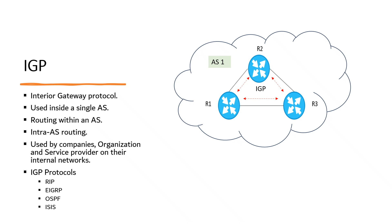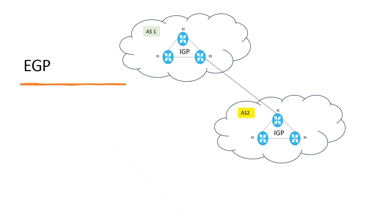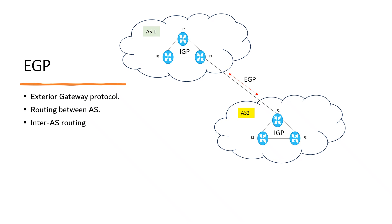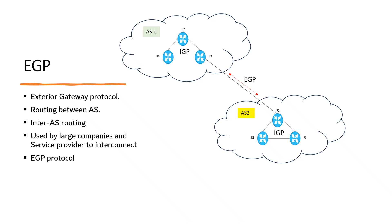In our CCNA curriculum, we only cover OSPF, which we will discuss in upcoming sessions. EGP, also known as Exterior Gateway Protocol, is designed for routing between autonomous systems — it is referred to as inter-AS routing. Service providers and large companies may interconnect using EGP. The only currently viable EGP is BGP, Border Gateway Protocol, which is the official routing protocol used by the internet.